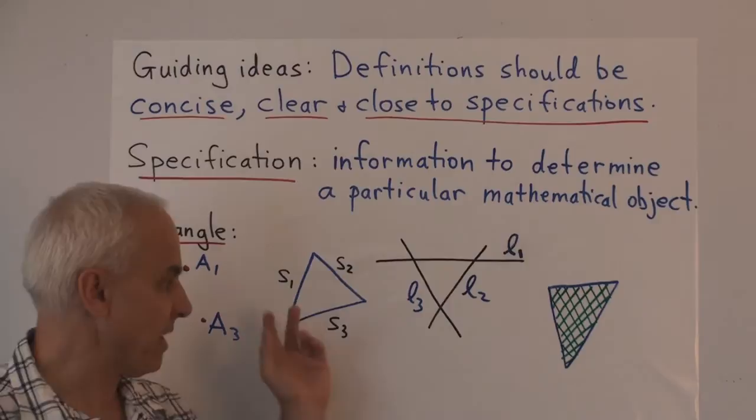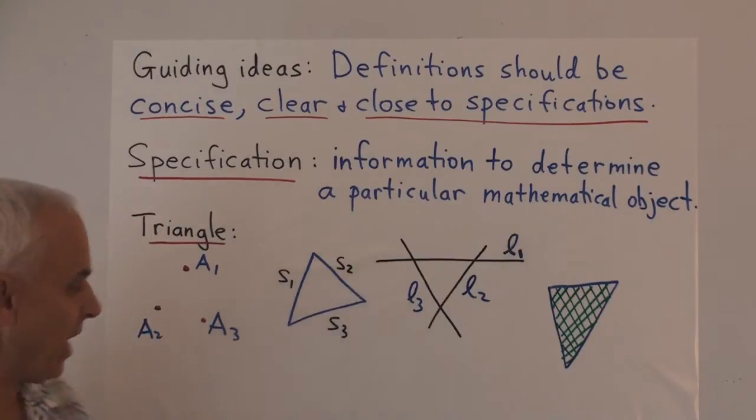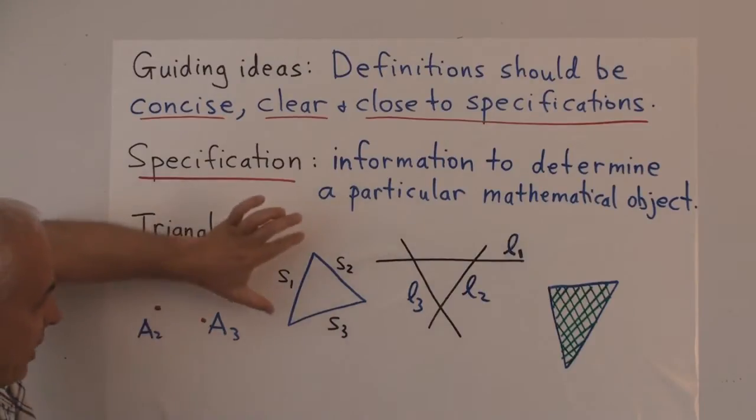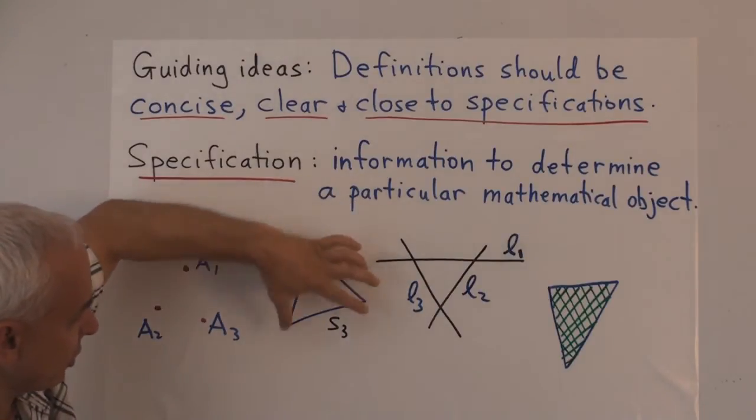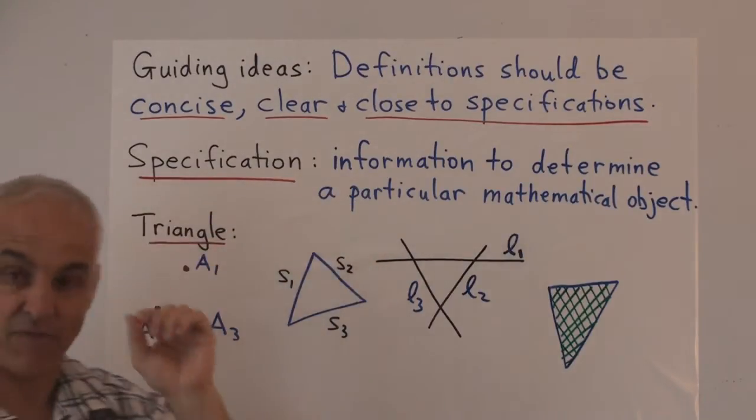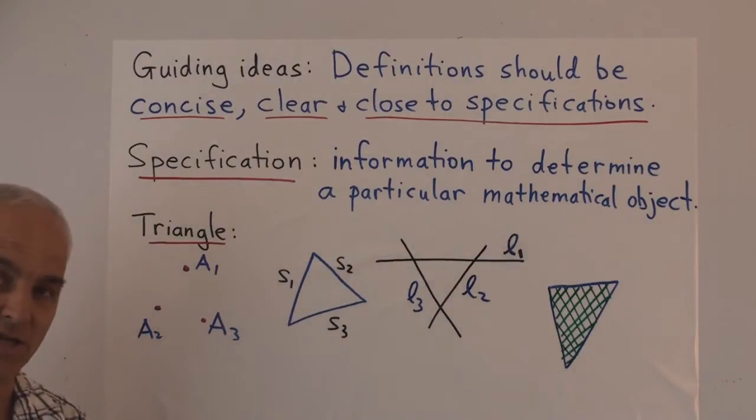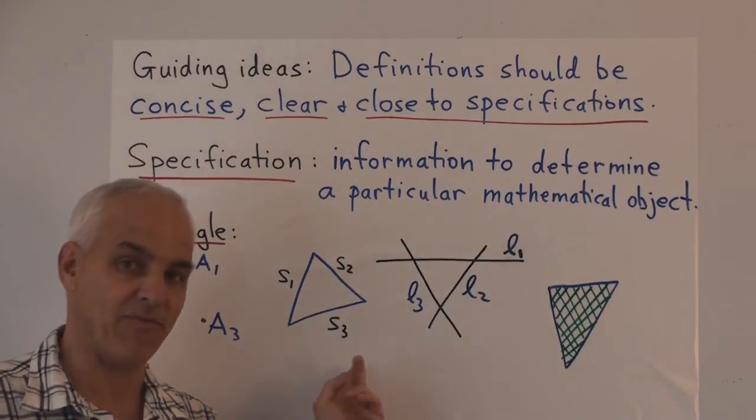With this approach, we need to specify the three line segments. To specify a line segment requires two endpoints. So we have two, two, two. But each one of these endpoints is itself a point. So we have six times two, twelve pieces of information to specify the triangle, the line segments.